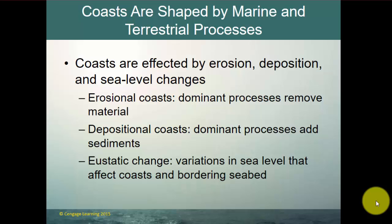Erosional coasts dominate where the dominant processes remove material, and on depositional coasts the dominant processes add sediment. We also talk about isostasy, or isostatic rebound — continents move up and down based on how much mass is in the continent. If more is added to the continent it sinks, and sea level rises; if mass is taken away, it may rise and sea level drops. There are eustatic changes — variations in sea level — that affect coasts and the bordering seabed.